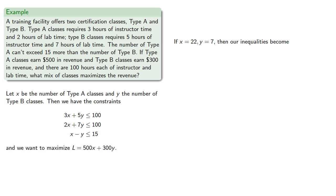If X equals 22, Y equals 7, our inequalities become, and so 22,7 is outside the feasible region.